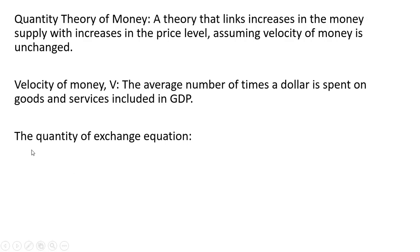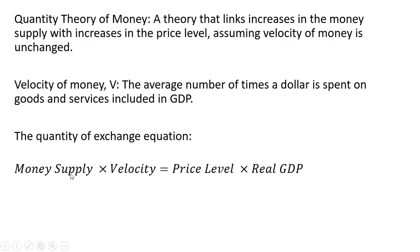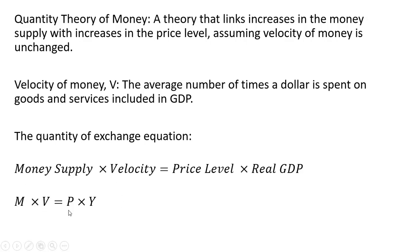Let's give the quantity of exchange equation: money supply times velocity equals the price level times real GDP. The quantity theory of money has a key assumption that velocity remains unchanged. Using some abbreviations: M is the money supply, V is the velocity, P is the price level, and Y is real GDP.